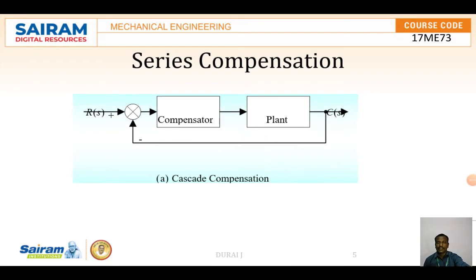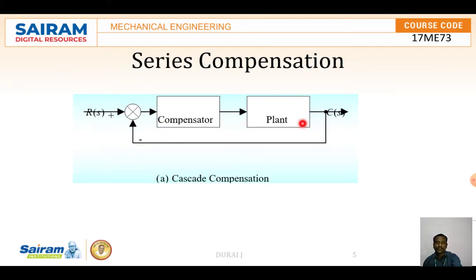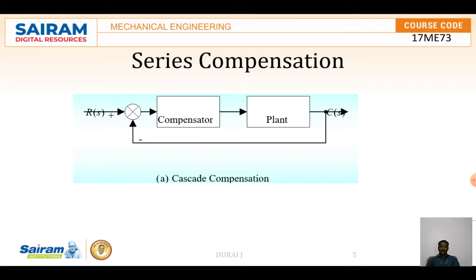Now we will discuss about series compensation. Here R(s) is the input and C(s) is the output. The compensator is placed between the error detector and the controller in the forward path — this is also called cascade compensation or series compensation. This type of compensator is a physical device whose transfer function is denoted as G(s).